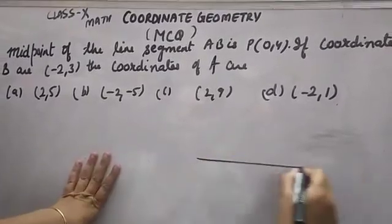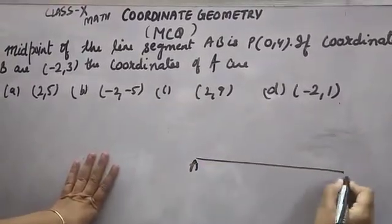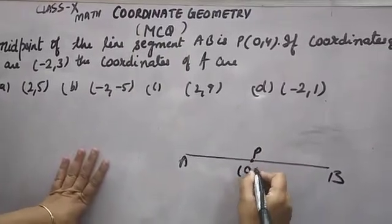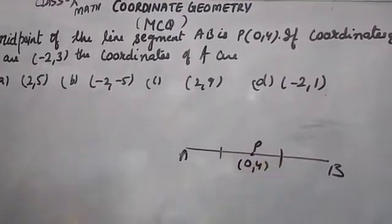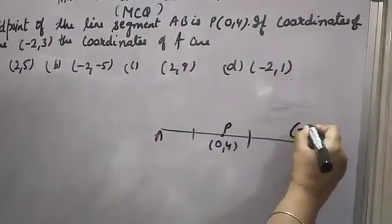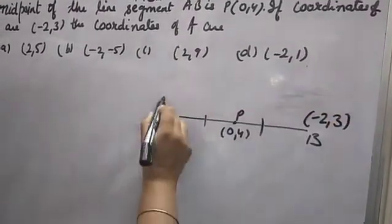The midpoint of line segment AB - line segment is there, A and B. Midpoint P, which divides it into two equal parts, is given as (0, 4). If coordinates of B are (-2, 3), you have to find coordinates of A.